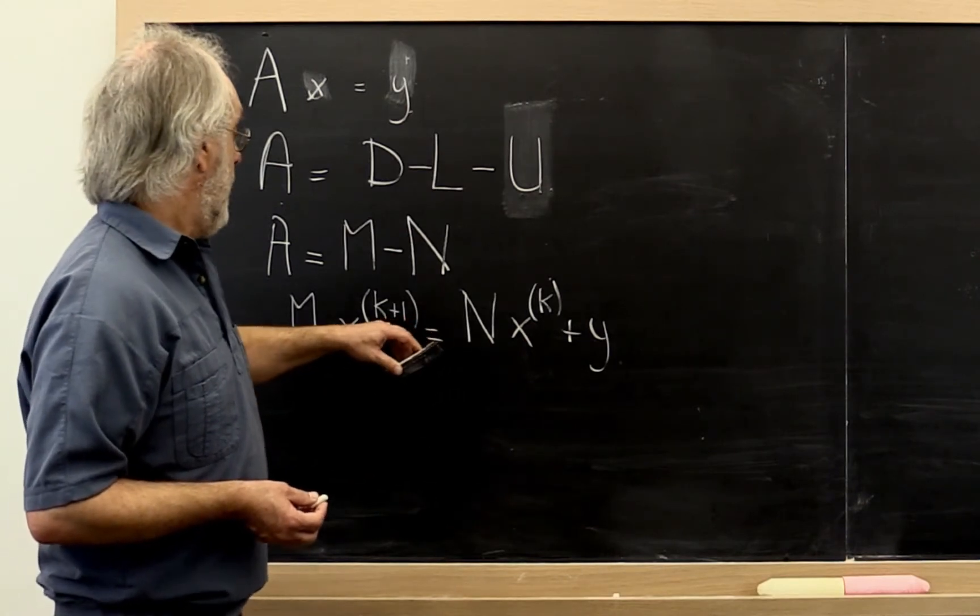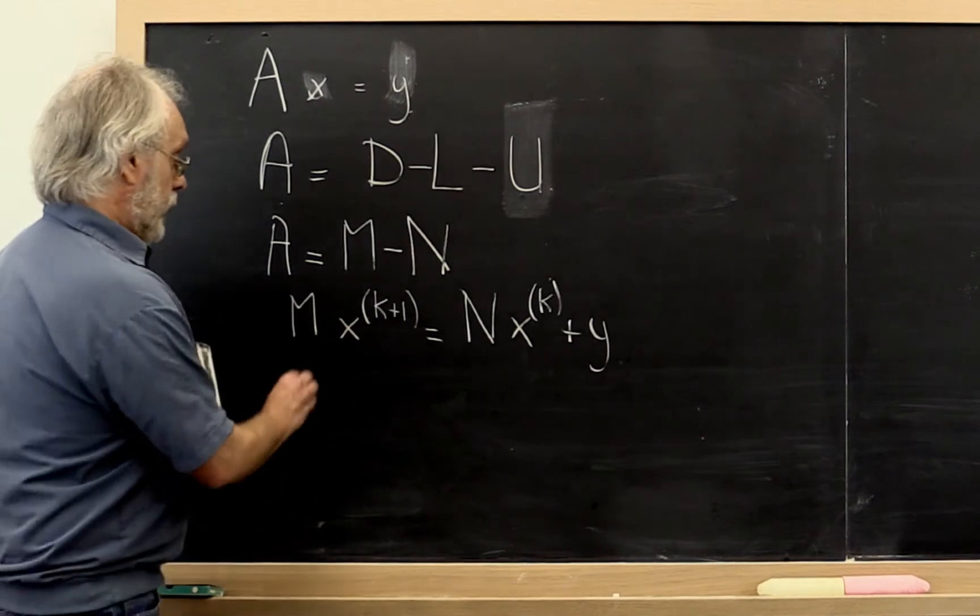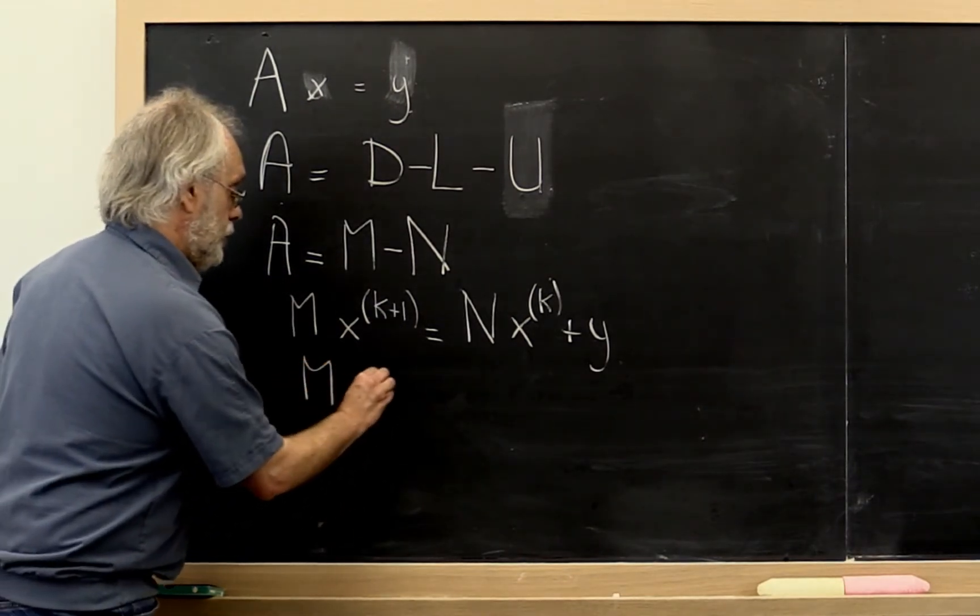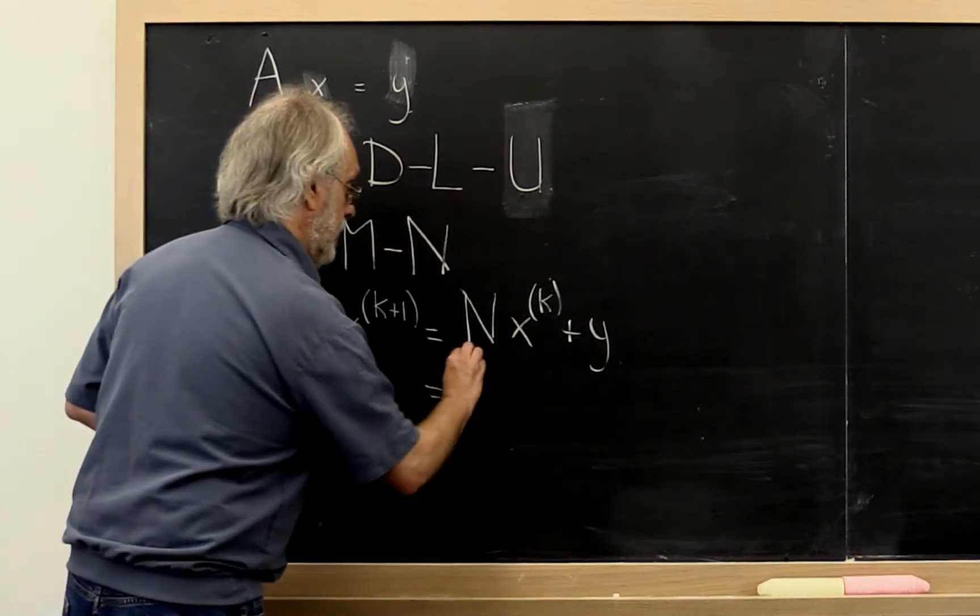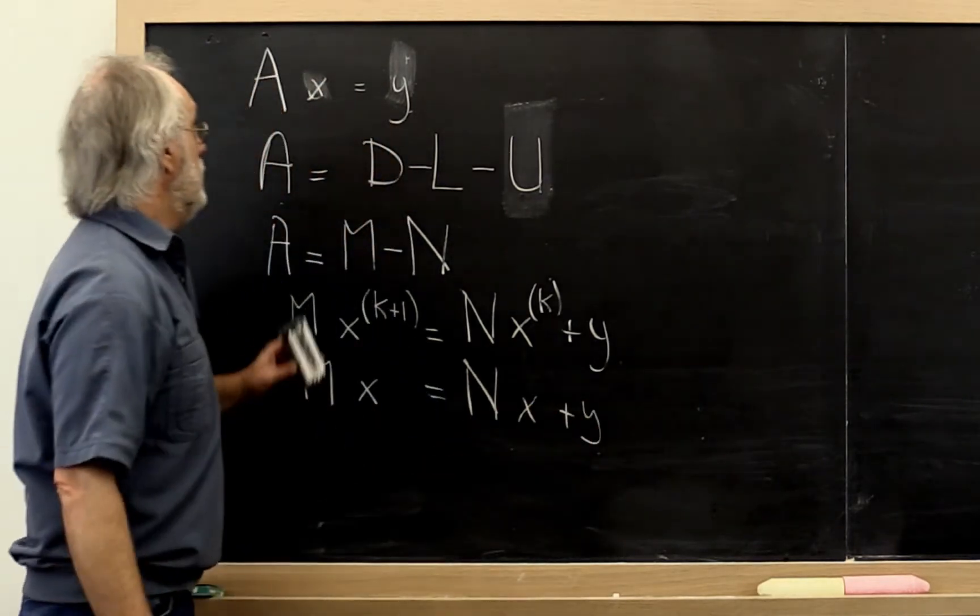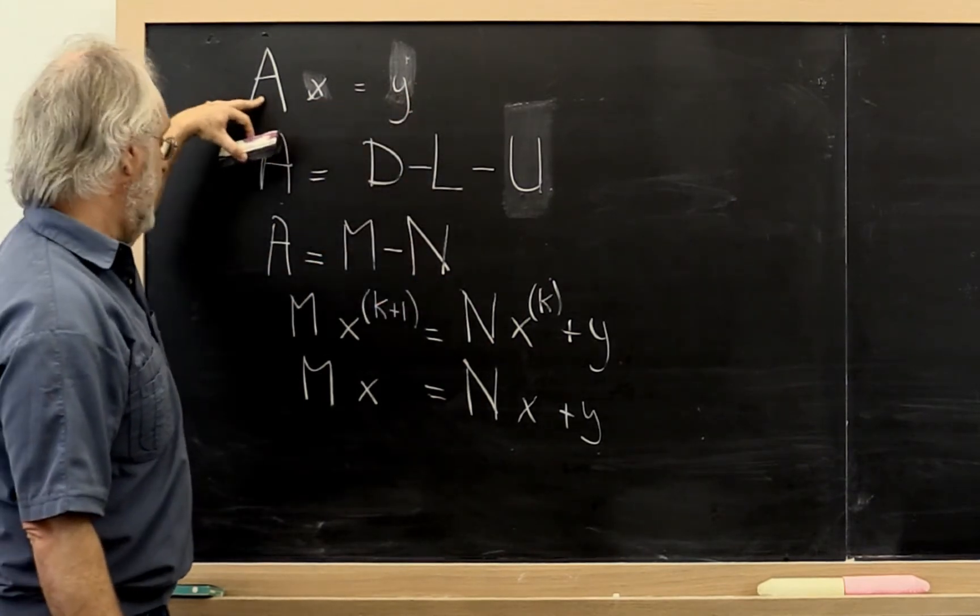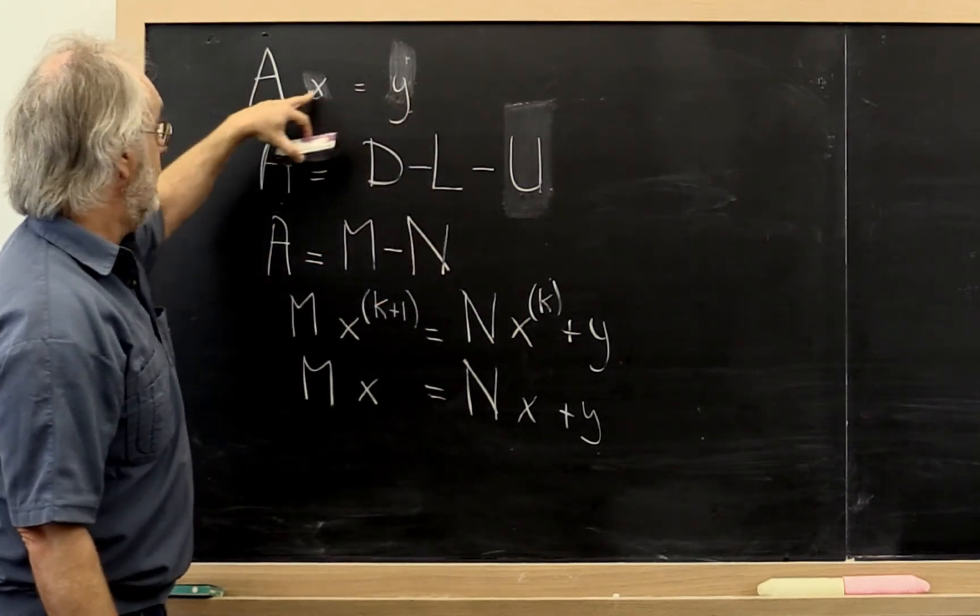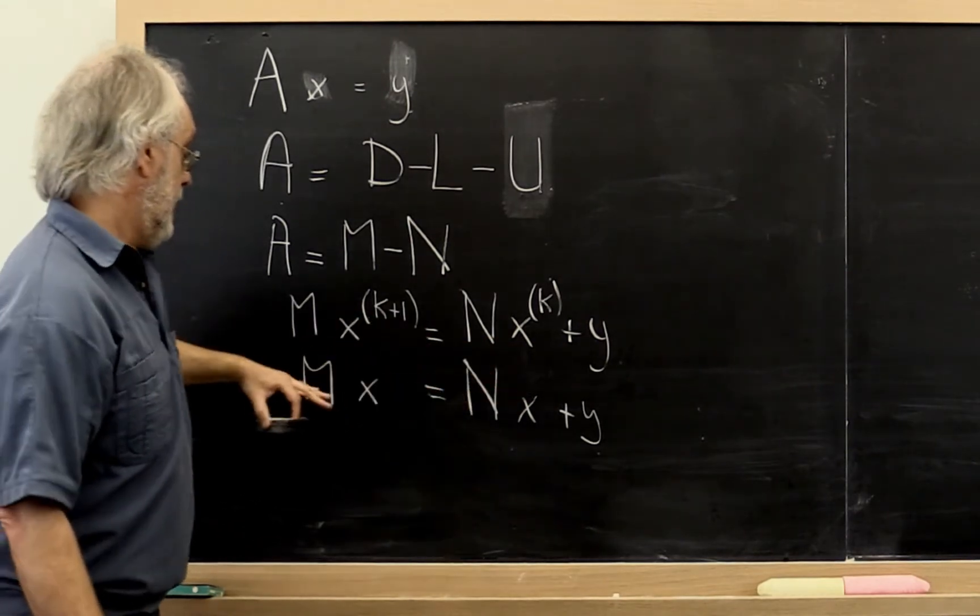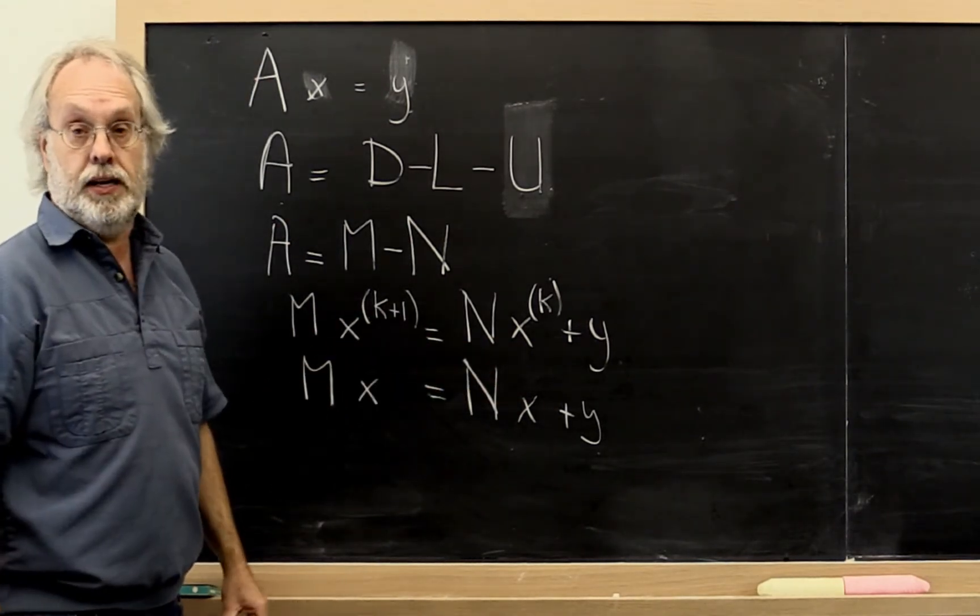Now we know that this is true. But we also know that the actual solution must satisfy this right here. Why? Because we want A times X to be equal to Y. If we plug in M minus N for A, then we can bring the minus N times X to the other side. And therefore this is actually equivalent to stating this right here.